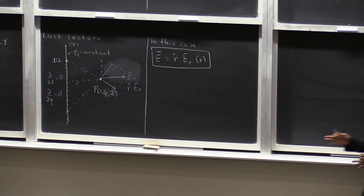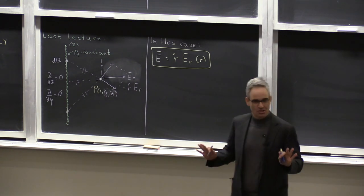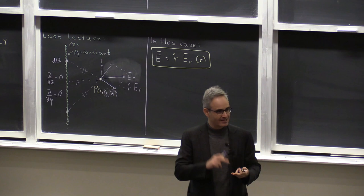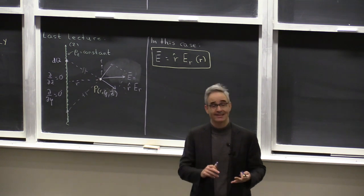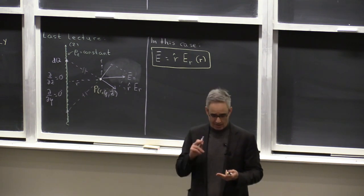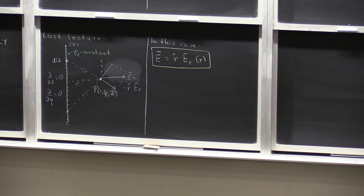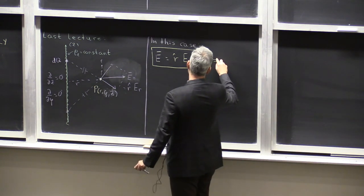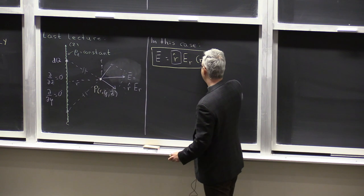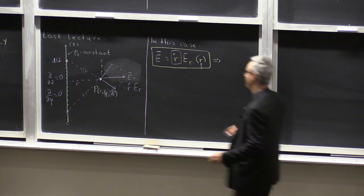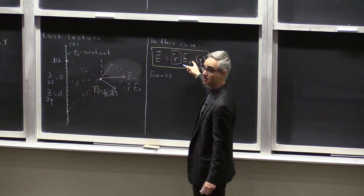This is a problem with cylindrical symmetry. In this course we have three forms of symmetry: rectangular, cylindrical, and spherical. For cylindrical symmetry and Gauss's law, the surface you choose is a cylinder; for rectangular symmetry, a box; for spherical, a sphere. It boils down to these three possibilities. This is the case where Gauss's law applies — the electric field points in one direction and depends on one variable — so Gauss's law can be used to find the exact form of that one unknown function.